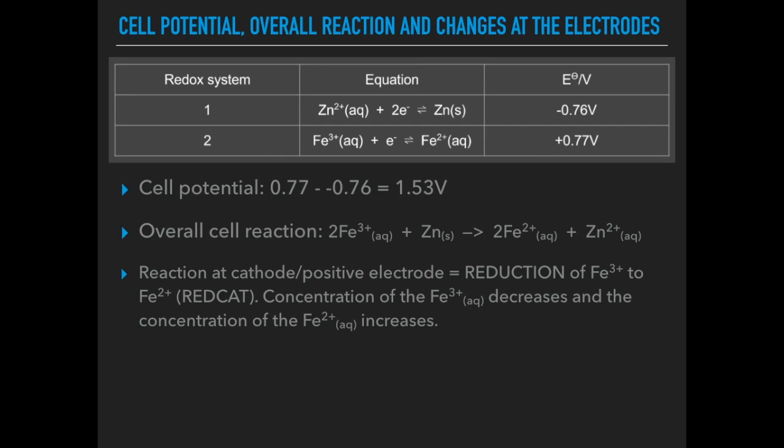We now look at the reactions taking place at each electrode. So the most positive electrode is the positive electrode or the cathode. And reduction always takes place at the cathode because it's the one that moves forward.